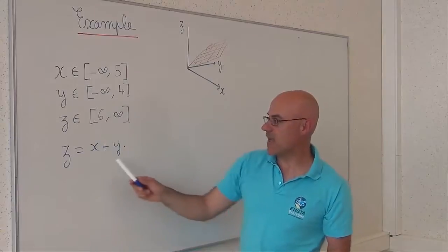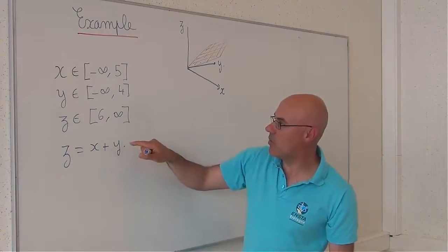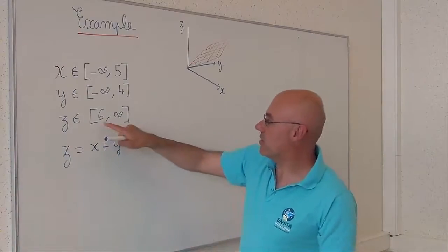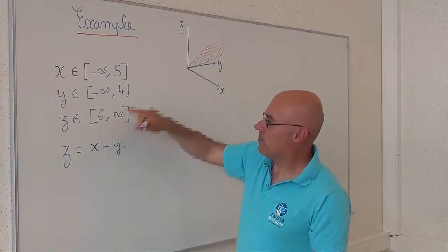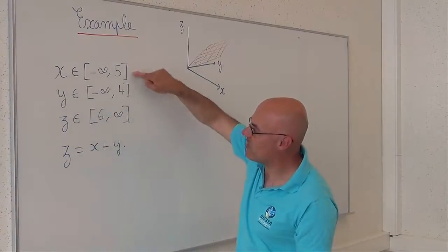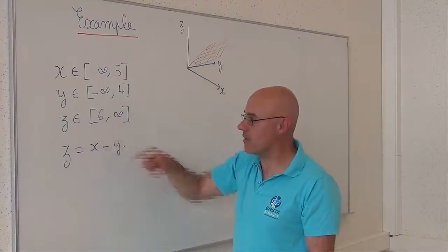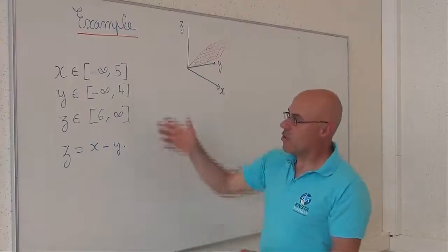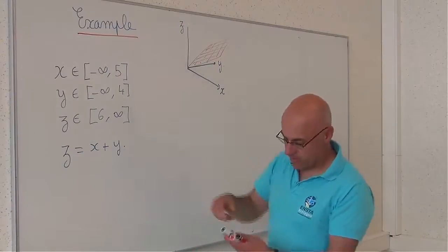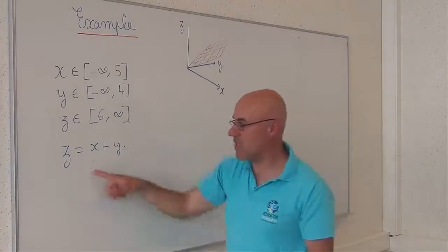For instance, I can see here that z cannot be equal to 10. Why? Because I cannot find x and y inside these intervals so that z can be equal to 10. So what means to contract these three intervals? It means to build a contractor associated with this equation.